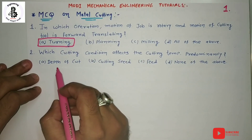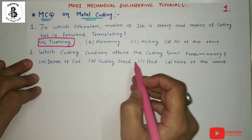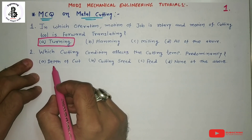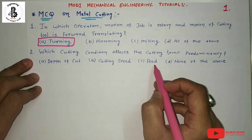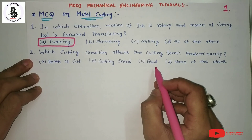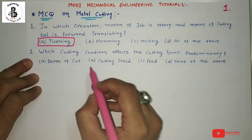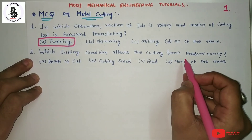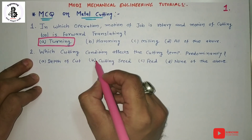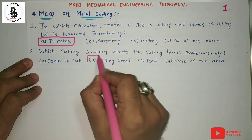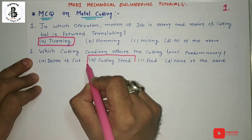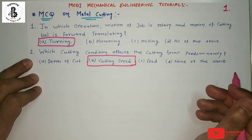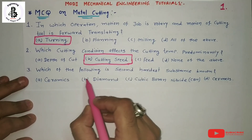Second question: Which cutting condition affects the cutting temperature predominantly? The options are: depth of cut, cutting speed, feed, and none of the above. These three — depth of cut, cutting speed, and feed — are considered machine parameters. Cutting speed has the highest influence on cutting temperature. So the answer is B: cutting speed.